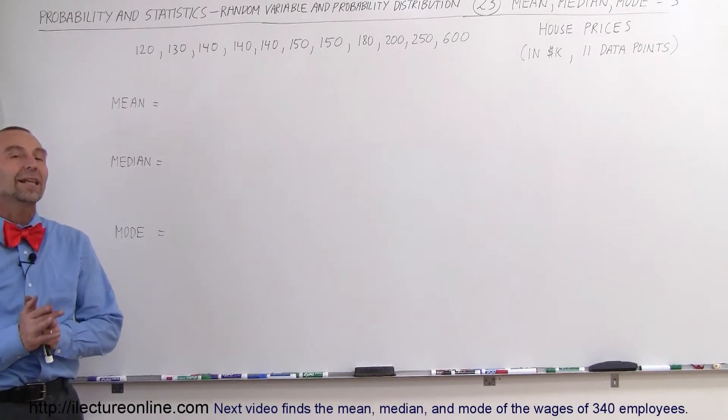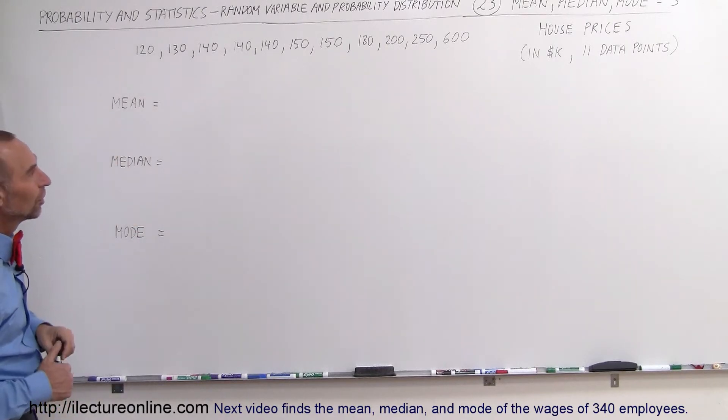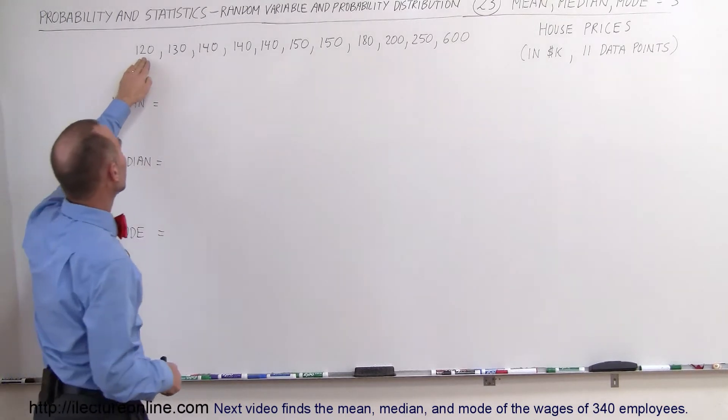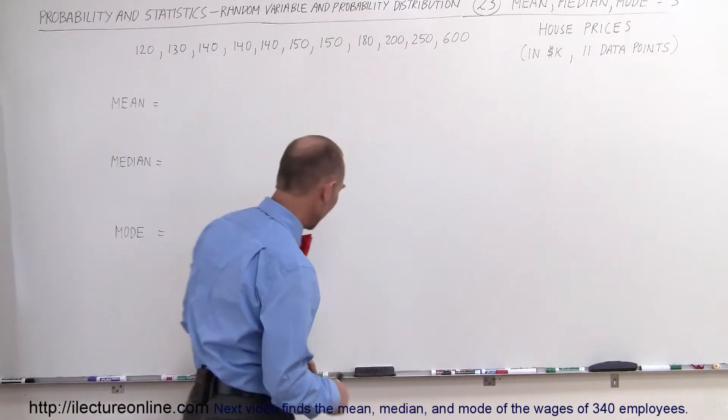Welcome to Electronline. Now let's take a look at the mean, the median, and the mode in terms of house prices. Let's say there's a small town and 11 houses were sold that year. Here were the prices in thousands of dollars. Notice there's 11 data points, so there were 11 houses sold. The least expensive was $120,000 and the most expensive was $600,000.